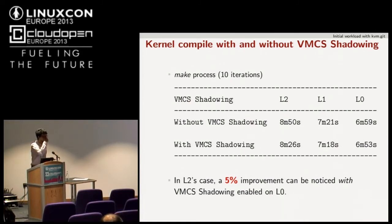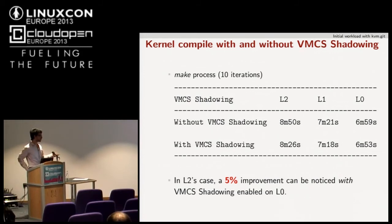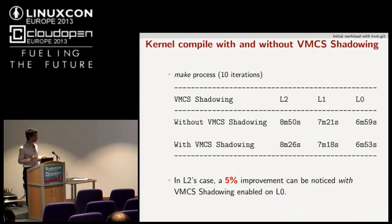Question: why would you get any benefit at L0 by turning VMCS shadowing on? L0 is just consistent — it doesn't matter here; it's almost the same. You don't really see any huge difference at L0. I just calculated an average. L1 results are similar to L0 — it's just an approximation, but the most interesting case to look at is L2.